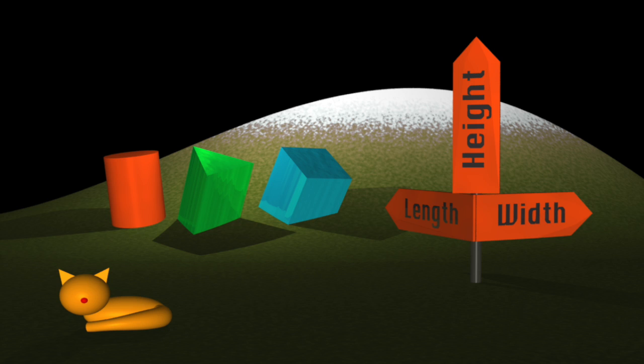When people say we live in a three-dimensional world, that means we see everything as having length, width and height. You are a three-dimensional object, and so is the earth you stand on.